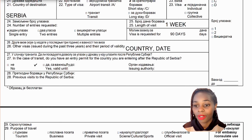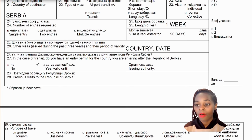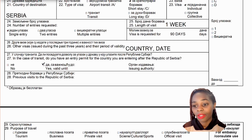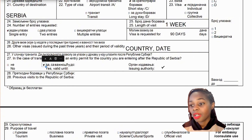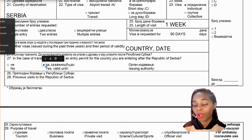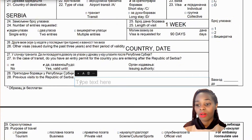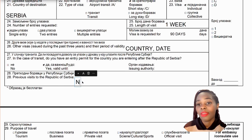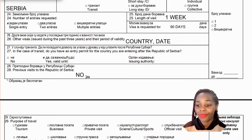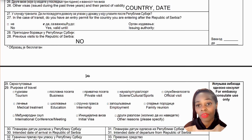Slot number twenty-seven applies in case of transit: do you have an entry permit for the country you're entering after Serbia? If yes, mention the validity date and issuing authority (country). If no, tick no. Slot number twenty-eight asks about previous visits to the Republic of Serbia — tick yes if you've been before, or no if you haven't.